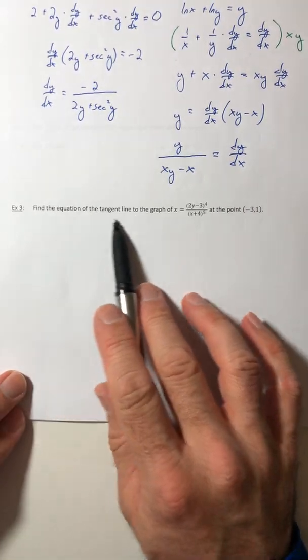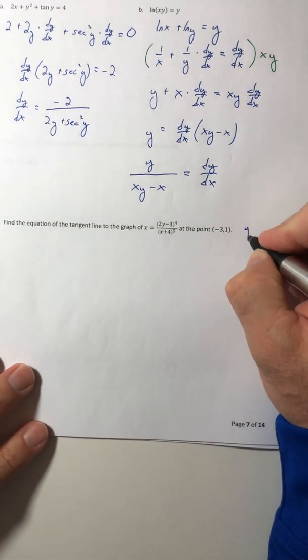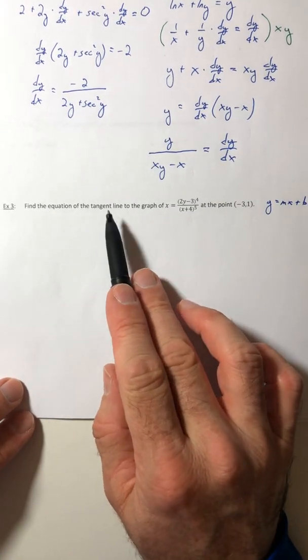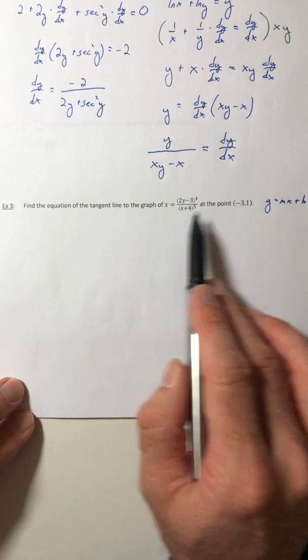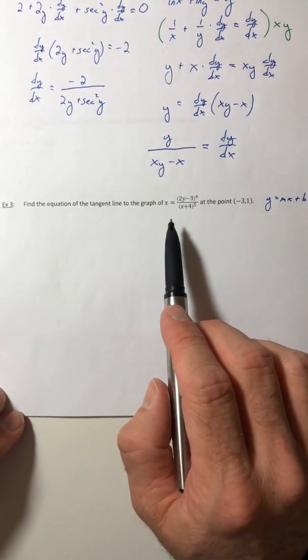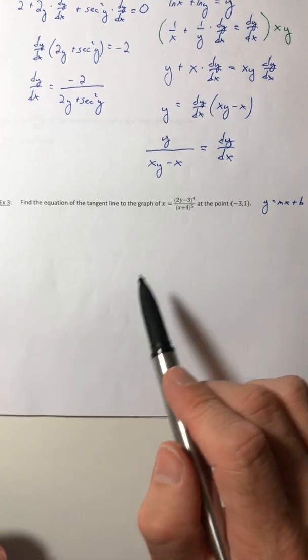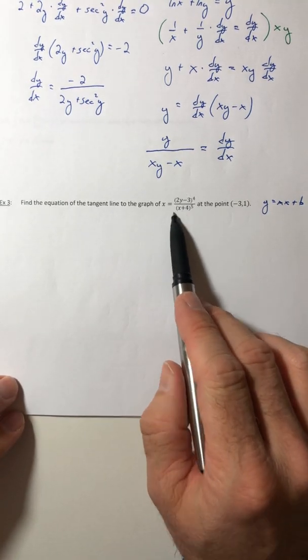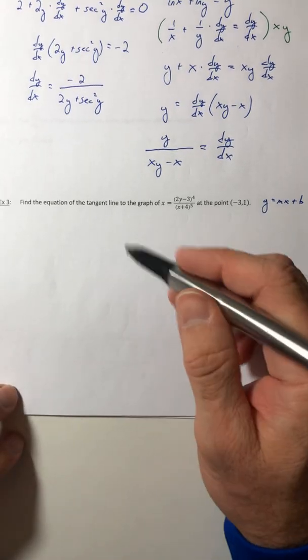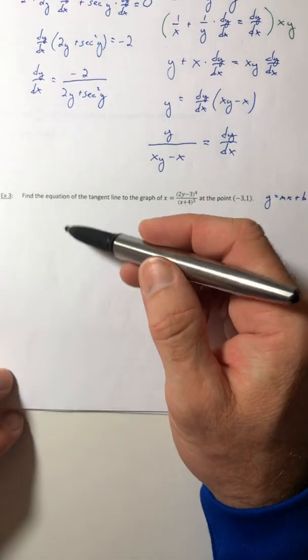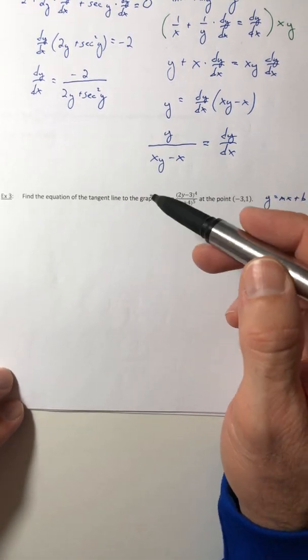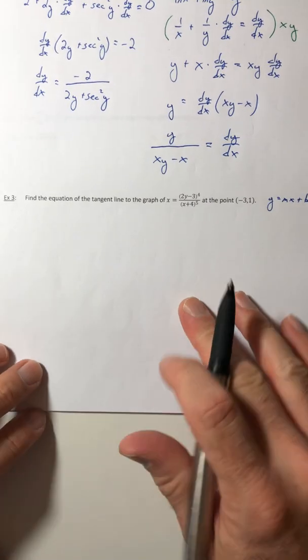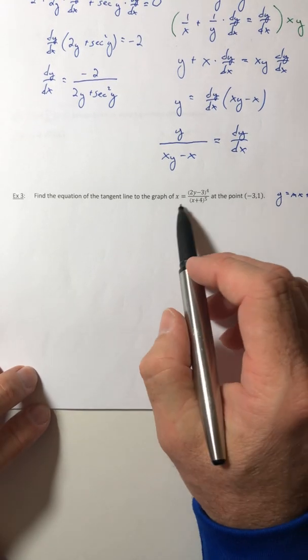Alright, let's try example three. Find the equation of the tangent line. Oh, that means you're looking for y equals mx plus b as an answer. So find the equation of the tangent line to the graph at this point. Okay, so do you need to use implicit differentiation with this? Well, the answer would be yes, because you have x and y together, and you don't have like y equals, and a bunch of x's on the other side. So if it's not solved for y, then you're going to have to either solve for y first and then do the derivative, or use implicit differentiation at the start. So this one, not very fun to solve for y, so we're just going to use implicit.